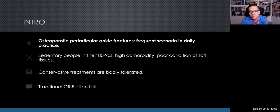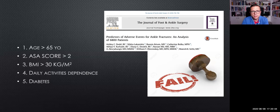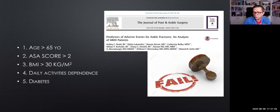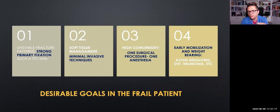Remember that these fractures are very common — a frequent scenario in daily practice. We treat sedentary people in their 80s or 90s with high comorbidity and poor condition. Conservative treatments are badly tolerated, and conventional open reduction and internal fixation often fails. Predictors of adverse events include age over 65, ASA score over 2, BMI over 30, and daily activities dependence or diabetes. The desirable goals in frail patients are strong primary fixation, minimally invasive technique, a single surgical procedure, and most importantly, early mobilization with weight-bearing to avoid complications.